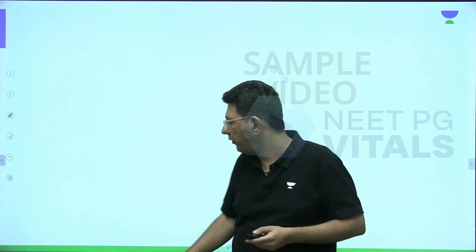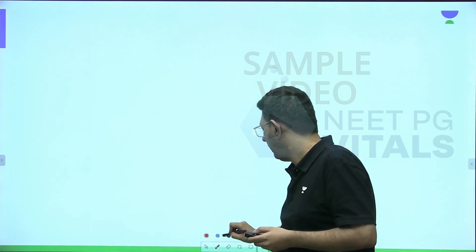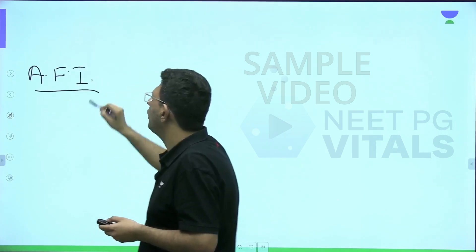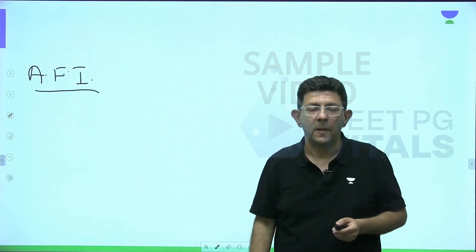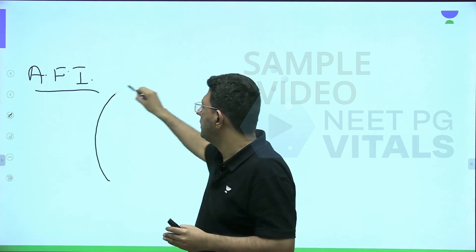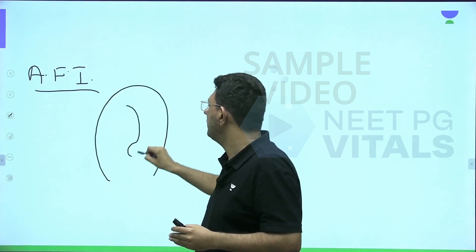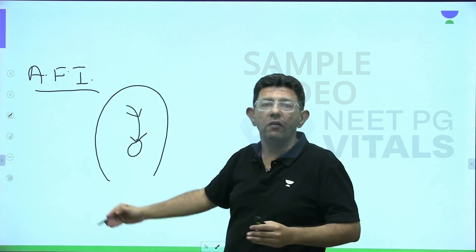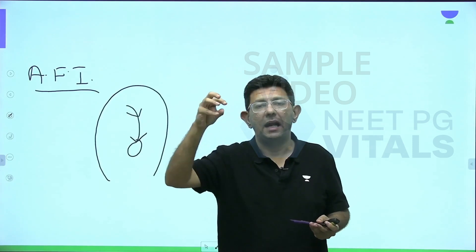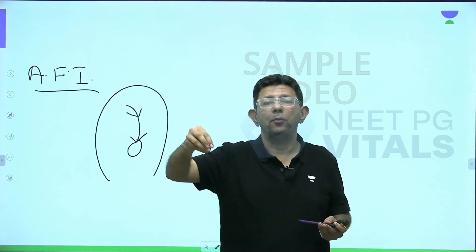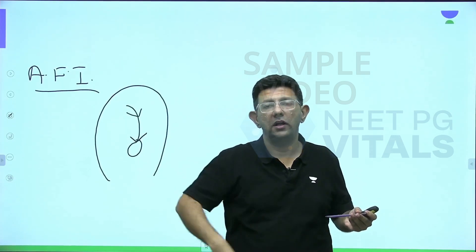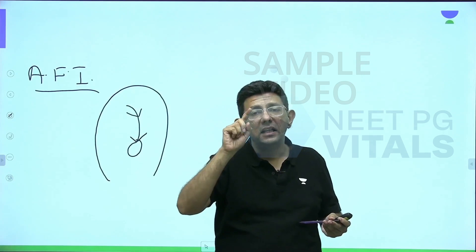First, we should know the concept of AFI. AFI stands for Amniotic Fluid Index — your radiology teacher will also teach you this. On ultrasonography, fluid always appears black. For AFI measurement, I take the sonography probe and place it on the mother's left upper, left lower, right upper, and right lower quadrants — four quadrants.